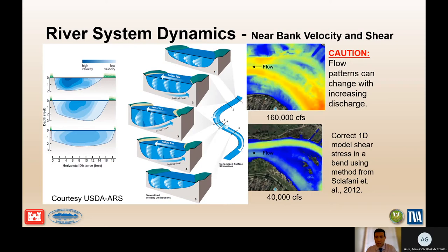When computing near-bank velocity and shear stress, which are critical for erosion, you need to understand this helical flow pattern around a bend. You can correct 1D model results using the method by Sclafani et al. to account for the helical flow pattern. Note that flow patterns can change with increasing discharge — at 40,000 CFS flow concentrates on the outside of the bend, but at 160,000 CFS it shifts toward the opposite bank due to flow momentum.